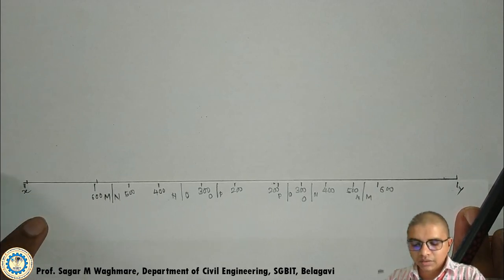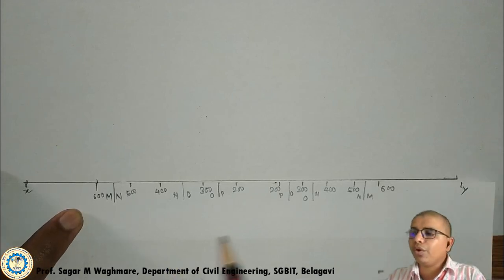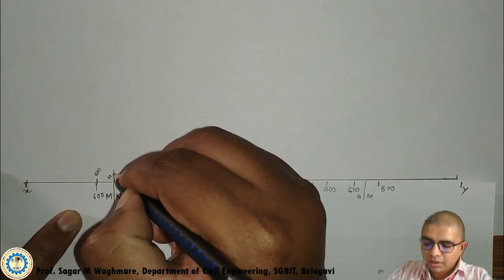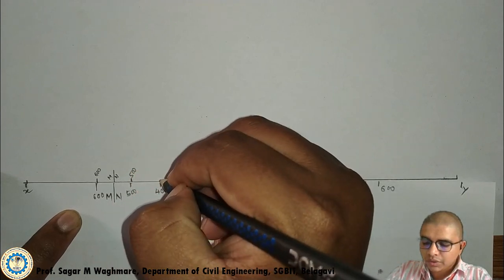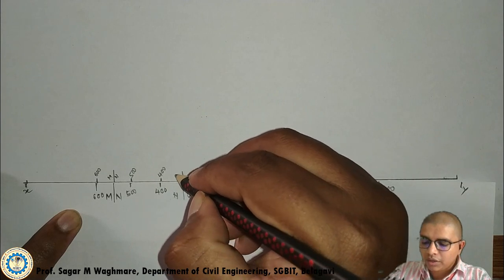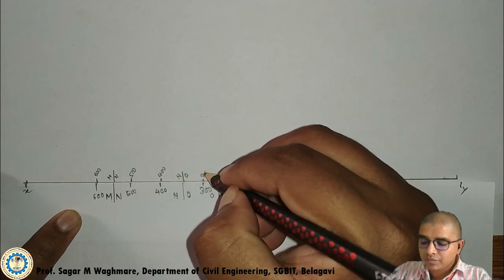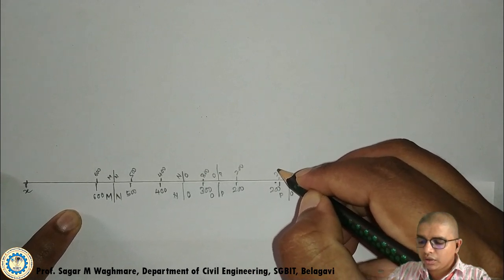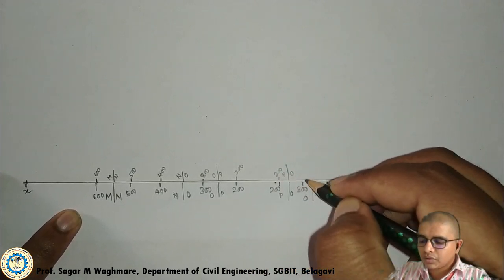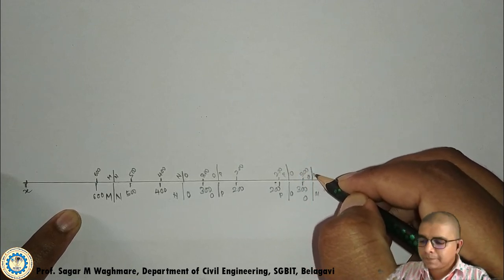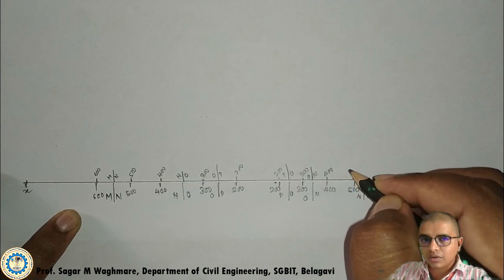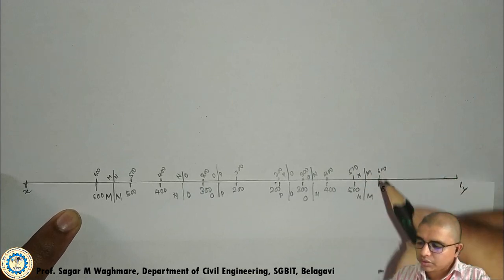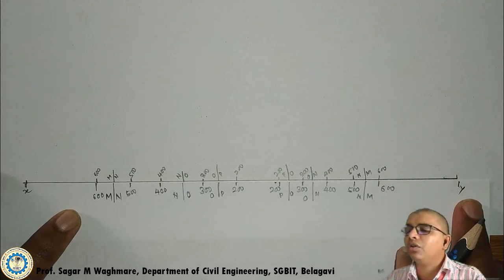Now the immediate next task is to copy all the points onto the white sheet as they are. Starting from X: 600, then the bigger line M and N, smaller line 500, bigger line 400, smaller line 400, bigger line N and O, then 300, bigger line O and P, then 200. Then continuing: 500, bigger line N and M, then 600. I have now copied all these points.